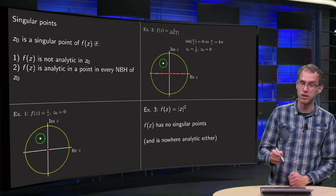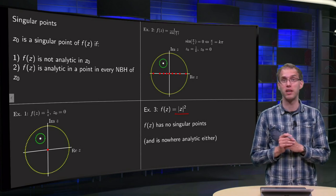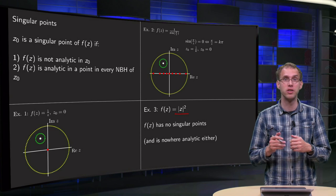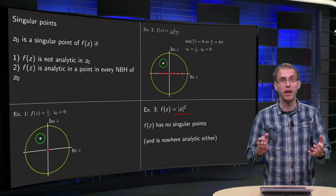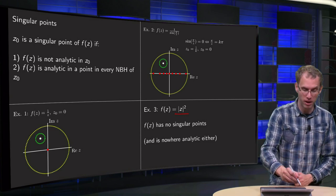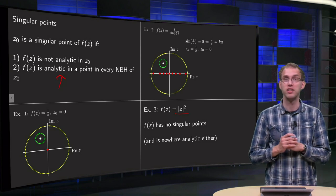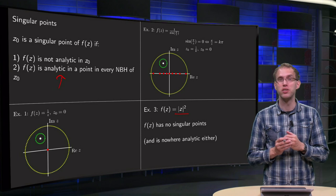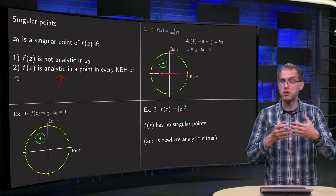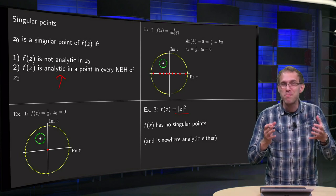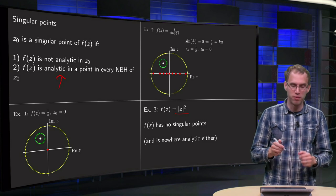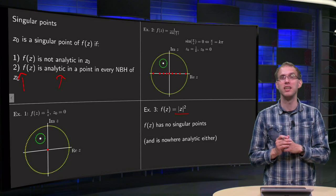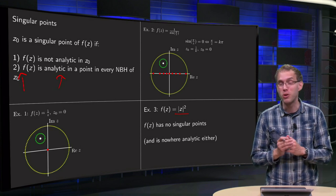Last example: f of z equals the modulus of z squared. Well, this function has no singular points at all because it is nowhere analytic, so you will never be able to satisfy the second condition. So singular points are the points where you expect them to be, but the definition, especially the second point, is slightly tricky if you want to apply it correctly.